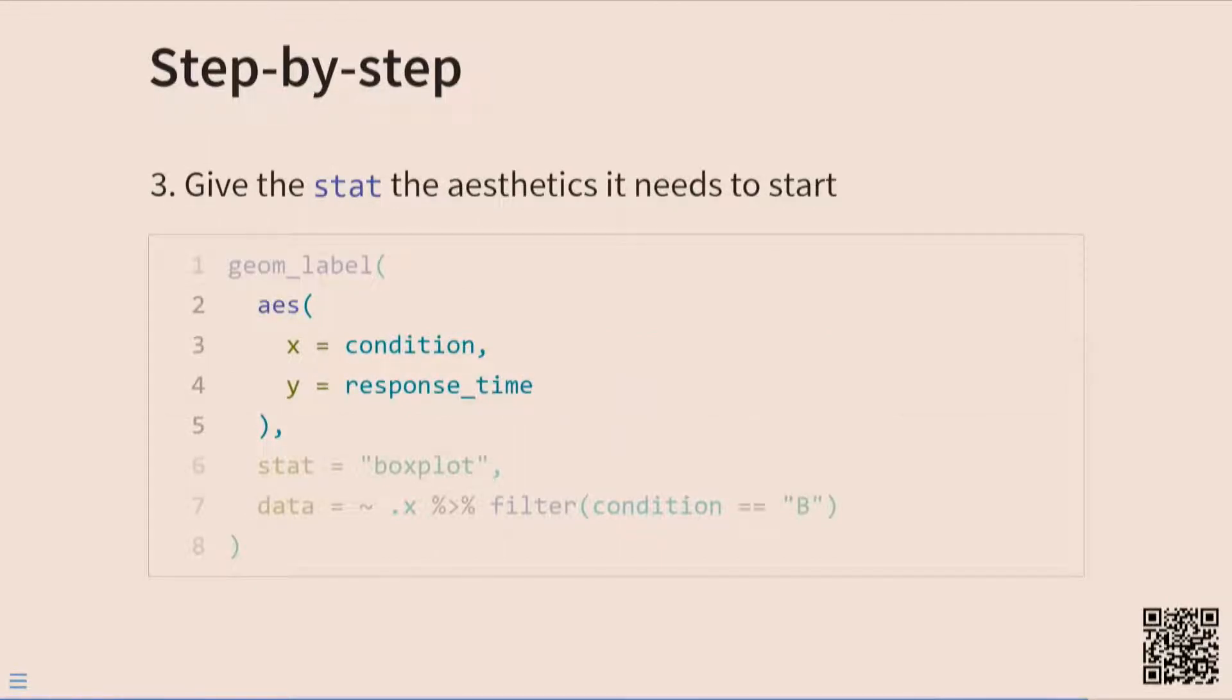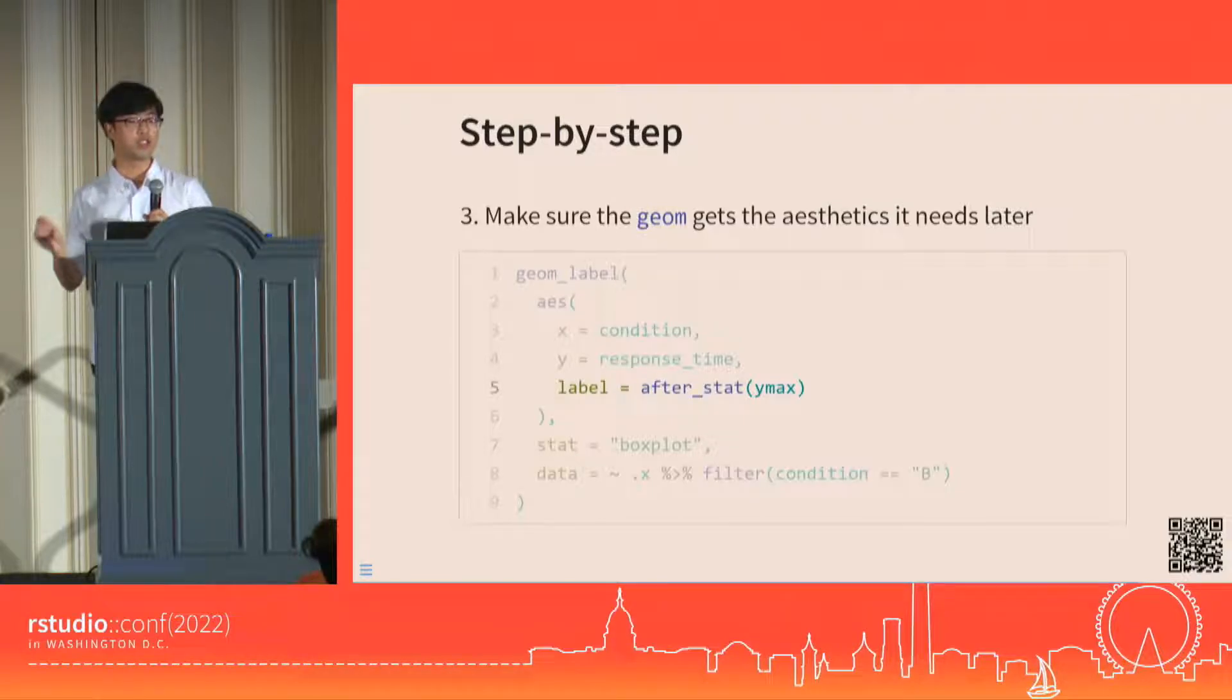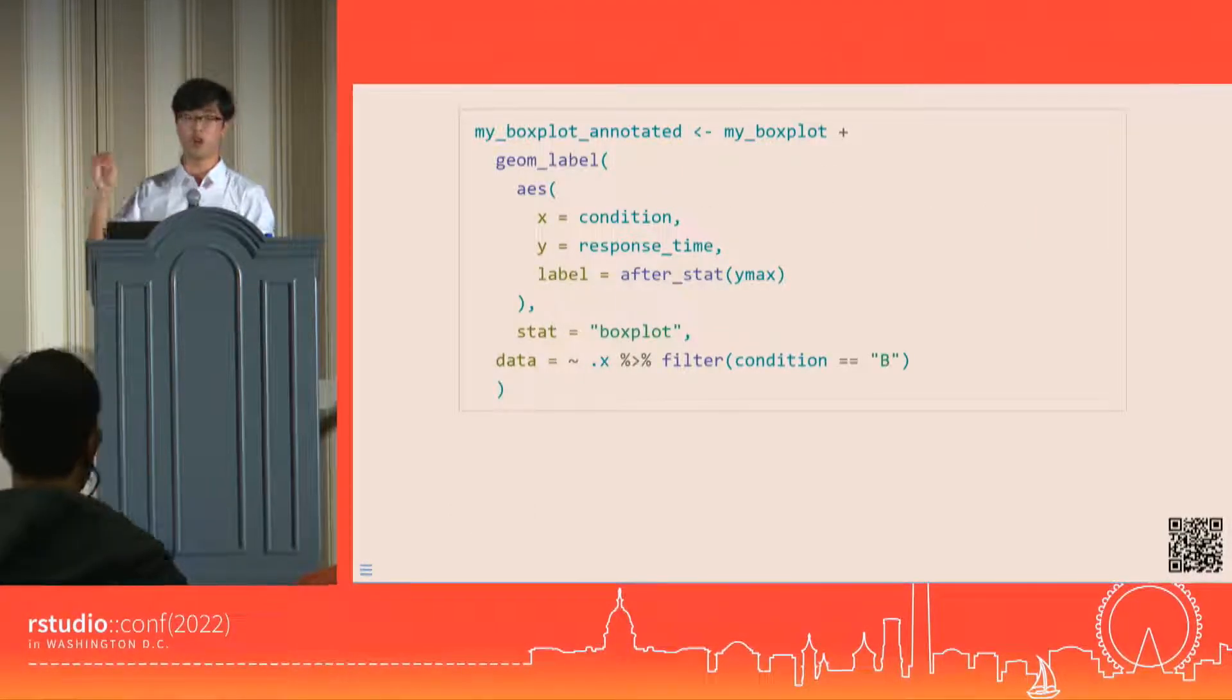Then we build up the aesthetic mappings, starting with the ones that the stat needs first, because the stat always receives the data first. We specify the x and the y, and then additional ones that the geom might need later, like label, which we want to be the same as the ymax value that the stat computes. That gives us this big chunk of code, and we're almost there, except for this error that says geom_label is missing a y aesthetic.